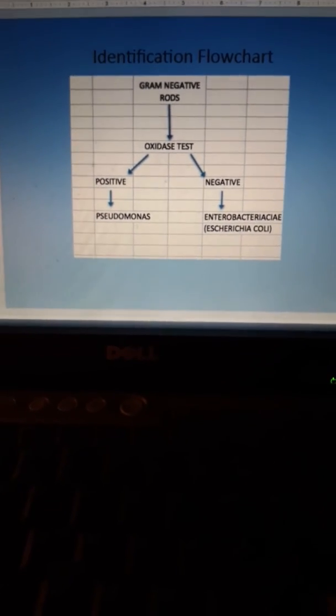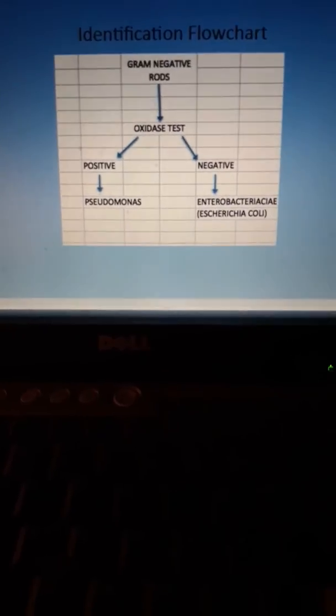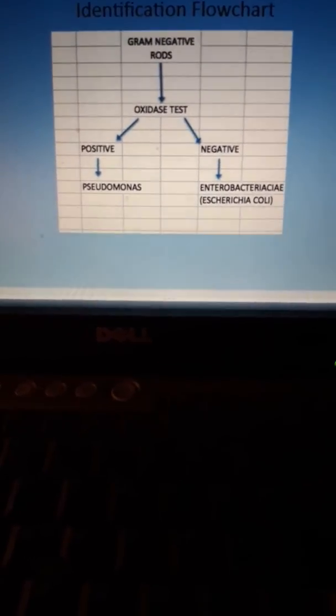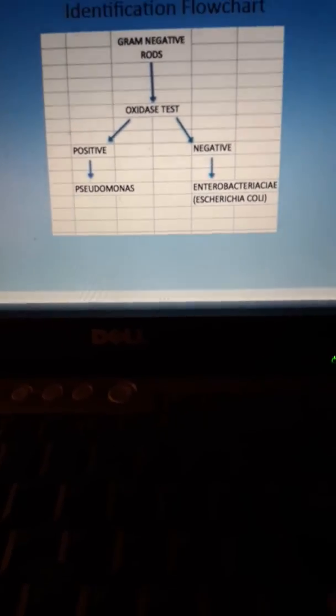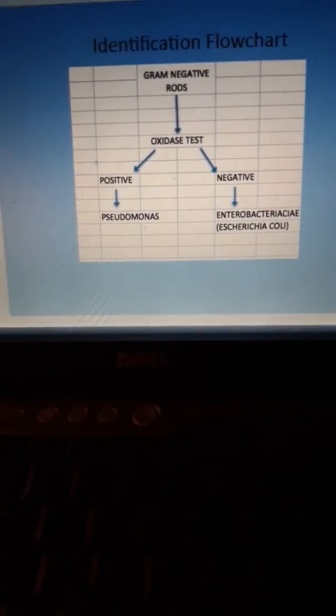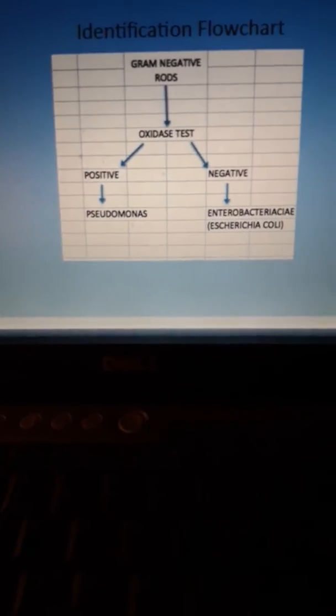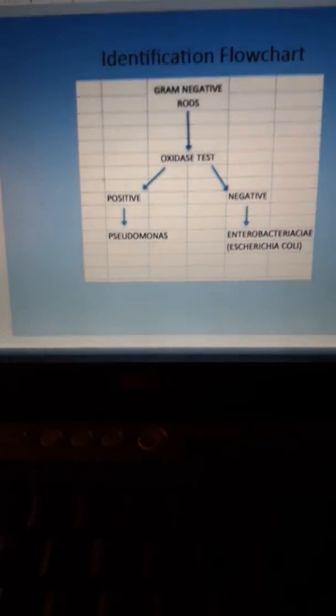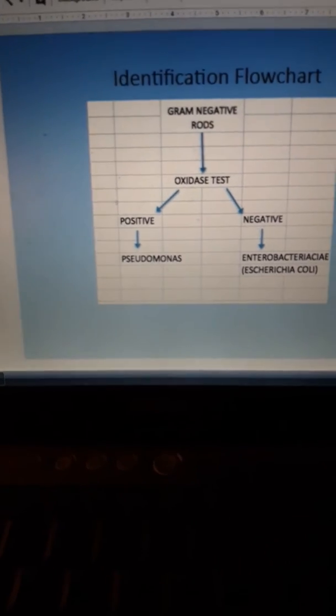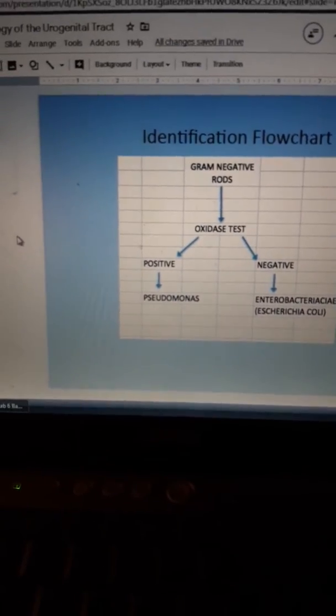Okay, like gram-positive cocci, this is a very basic flowchart. You have a much more detailed flowchart in your shared Google Drive with me. But anyway, like gram-positive cocci, we're going to have gram-negative rods.